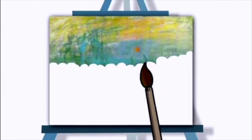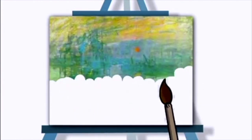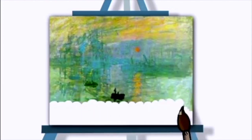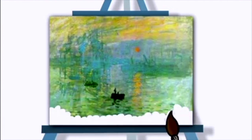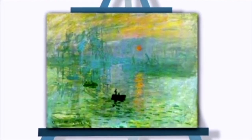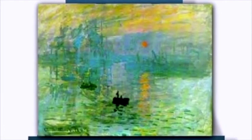Claude Monet — that's me — the impressionist painter. Why am I called that? Because of this painting: Impression Sunrise, which I did when I was 34. I could not really call it a proper sunrise — it was more a feeling, an idea of the sun rising, so I called it an impression. That word impression became the name for all paintings like this — ones that aren't exactly copies of something, but instead give you a feeling or a mood.